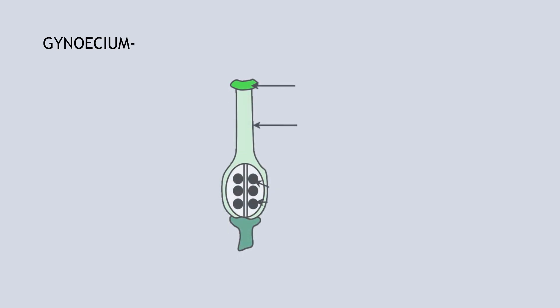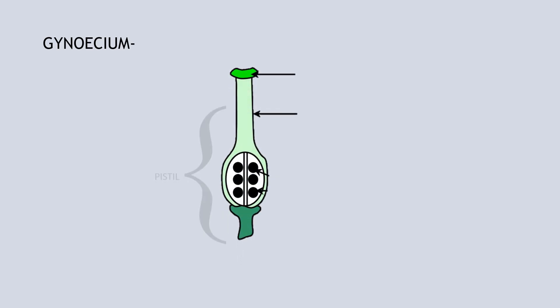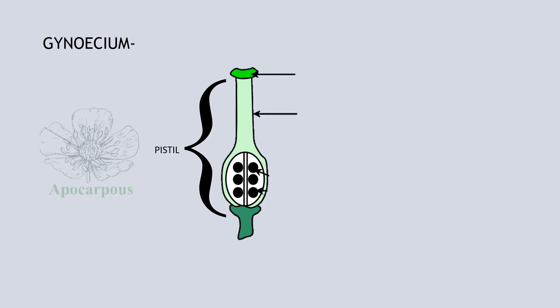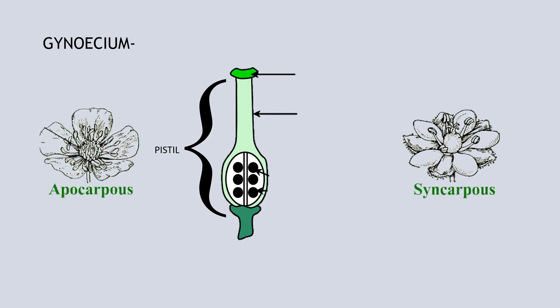Gynoecium: It is the female reproductive whorl of a flower. It is also called the Pistil. The unit member of Gynoecium is called the Carpel. Gynoecium may be Apocarpous or Syncarpous, meaning the carpels may be either free from one another or fused. Gynoecium is differentiated into the ovary, style, and stigma. The ovary contains ovules. The ovary forms fruit and ovules form seeds after fertilization.